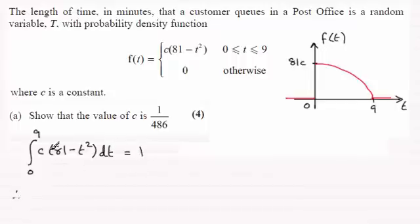And c is a constant so I can just pull that out the front. And then integrating 81 with respect to t is just 81t. And t² with respect to t that's going to be t³/3. And we're going between the limits 0 and 9 and that should equal 1.